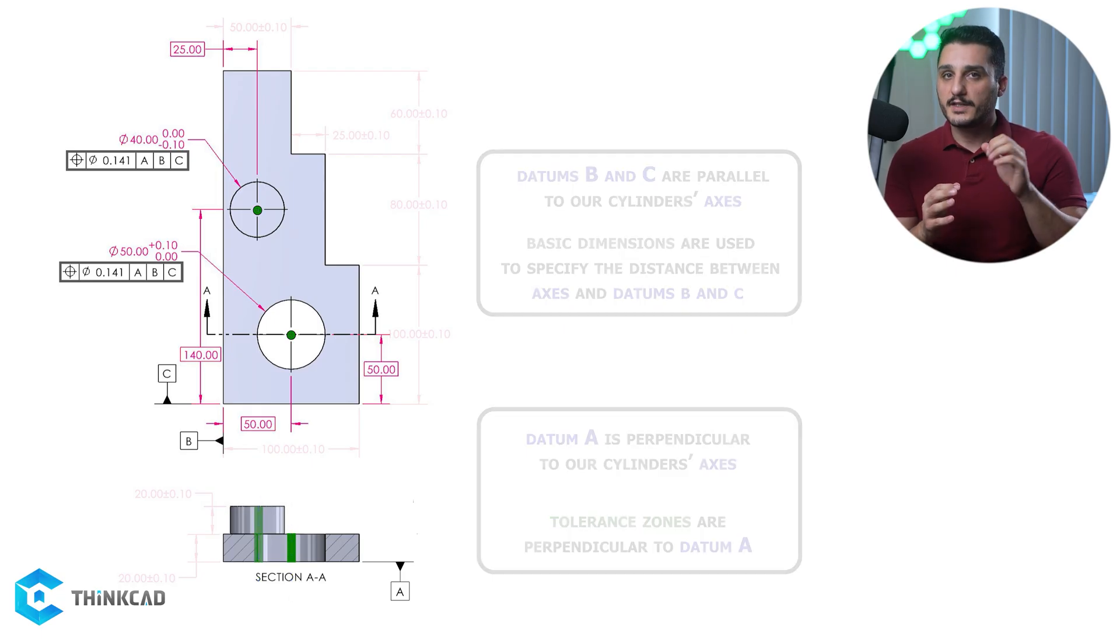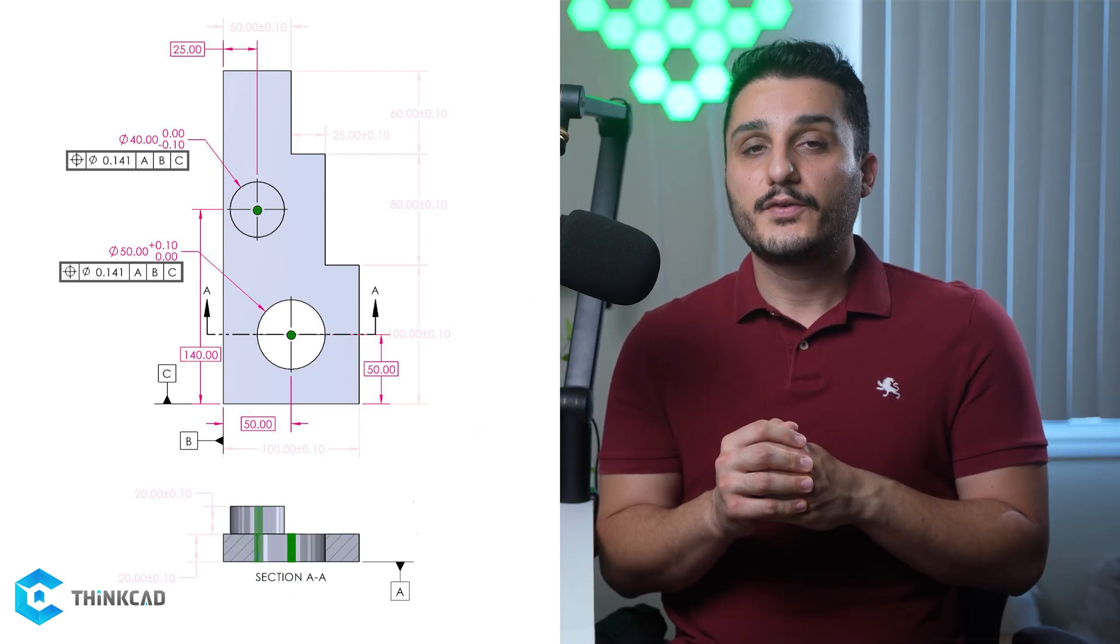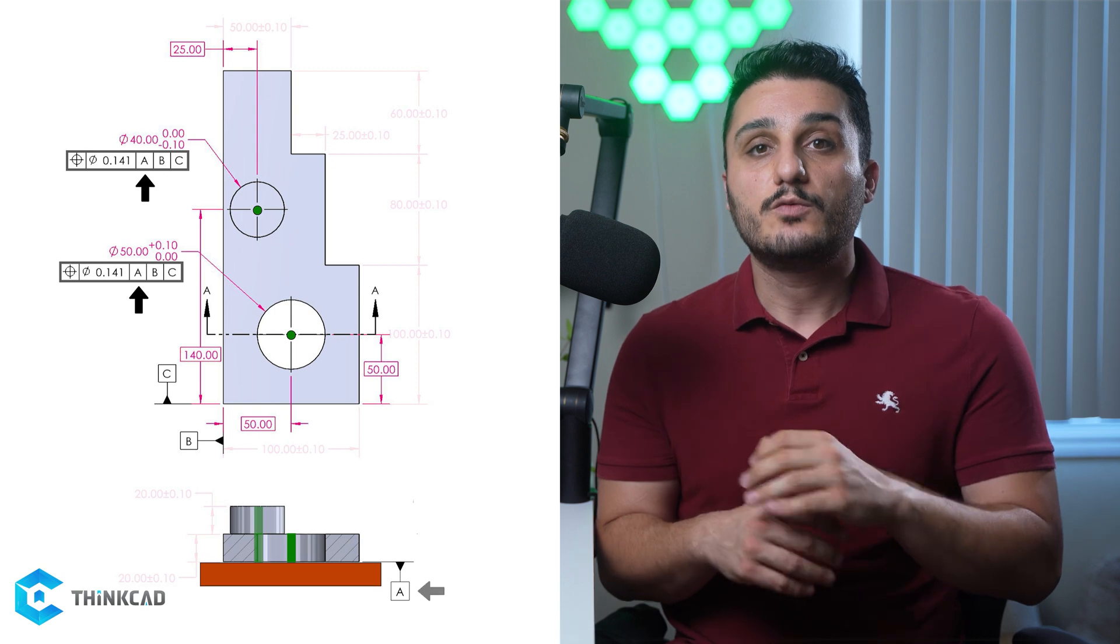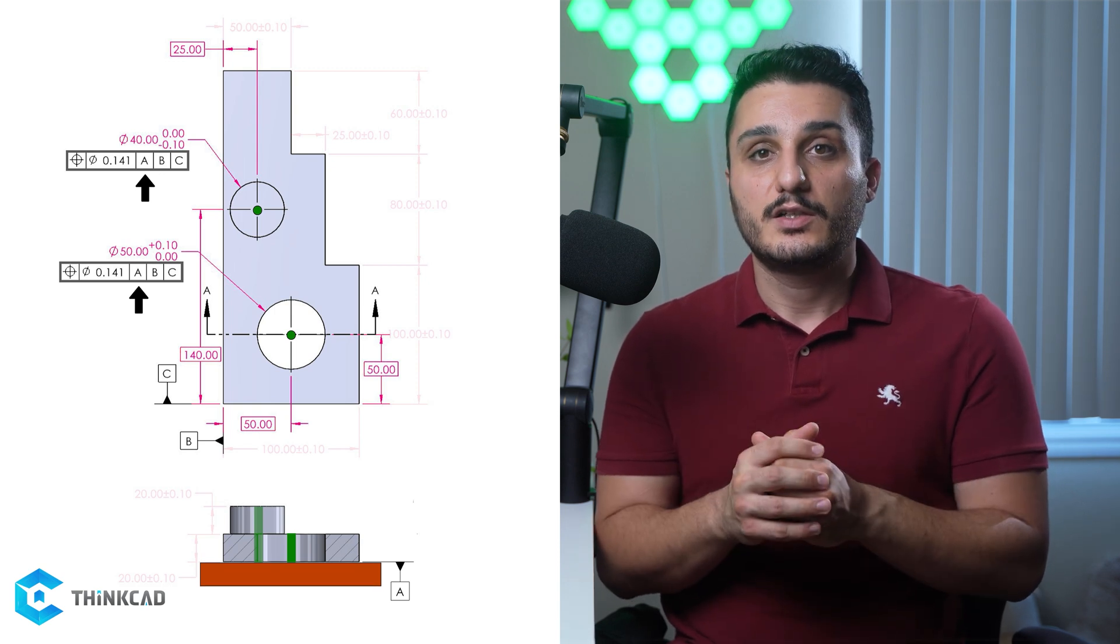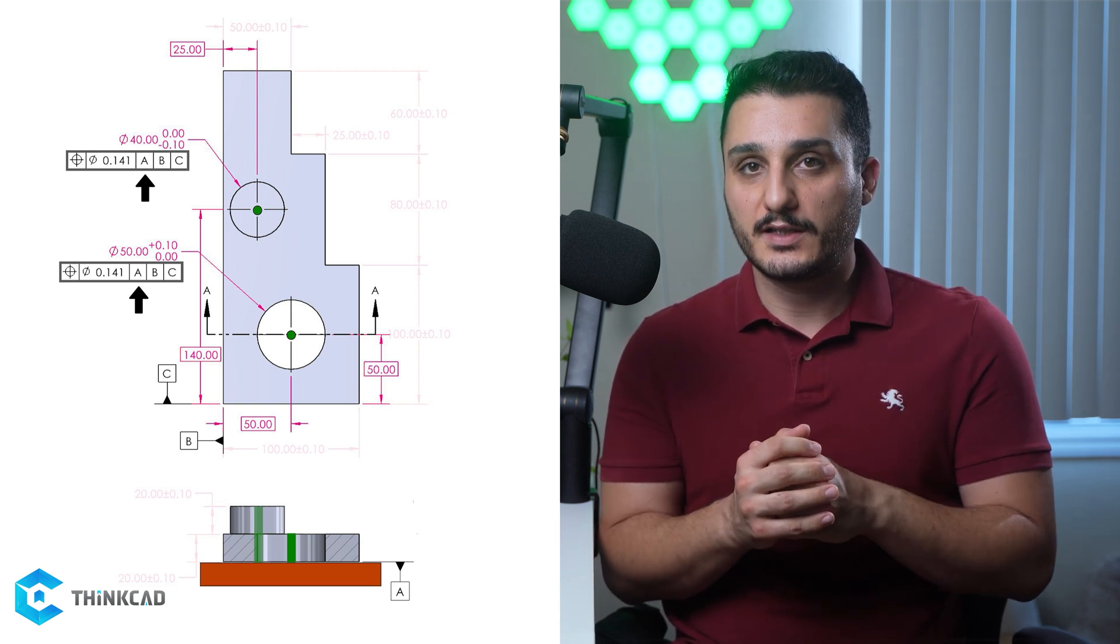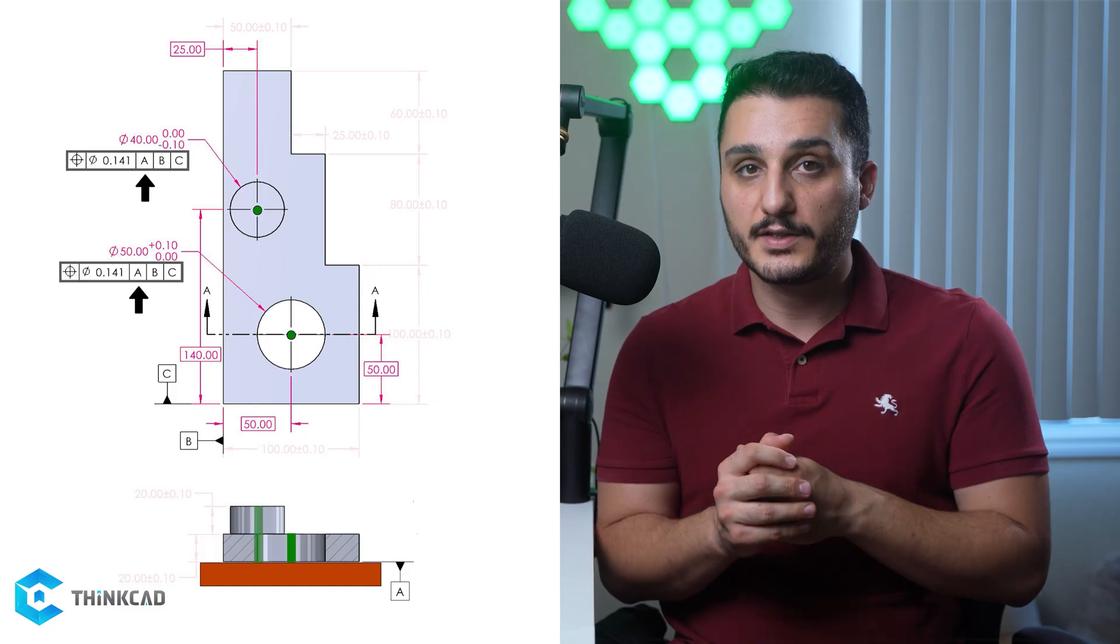Now let's see how one can inspect this part. First you need to restrict datum A, which is the main mating surface in our assembly. You will have minimum of three points of contact. This will limit three degrees of freedom.